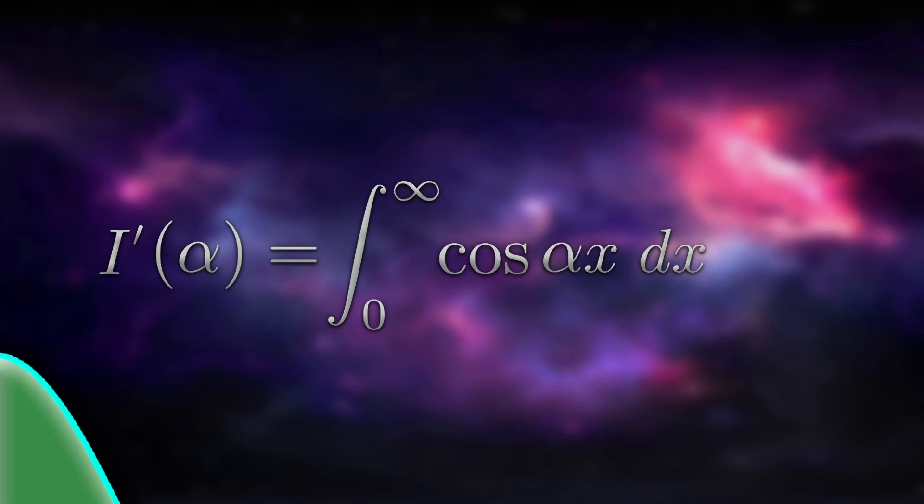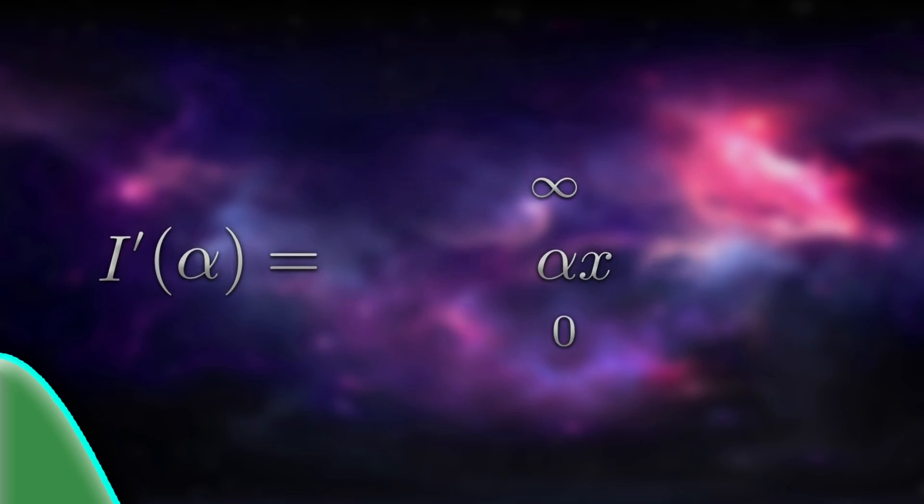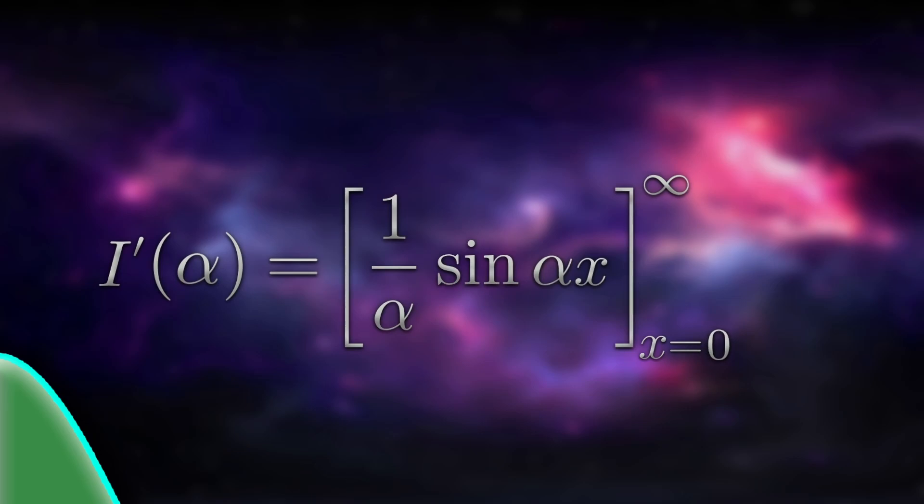Well, not so fast. We need to actually do the integral now. We're integrating with respect to x, meaning we're treating alpha as a constant. The integral of cosine is sine, and we divide by alpha. The only thing left to do is to apply the fundamental theorem of calculus. When x is zero, the inside becomes zero. When x goes to infinity, the inside does not converge. Sine of alpha x will oscillate between negative 1 and 1 forever. So Feynman's trick has failed us.